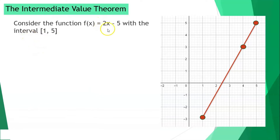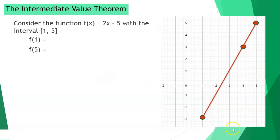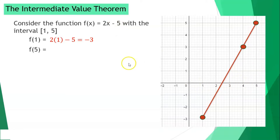Considering the function f of x is equal to 2x minus 5 with the interval from 1 until 5. This is the graph of 2x minus 5 with the interval from positive 1 until positive 5. If our x is positive 1, the value for y is negative 3, or we can simply substitute in the given function. If our x is 5, the value for y is also 5.